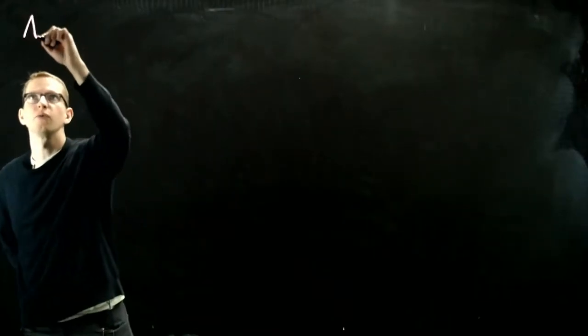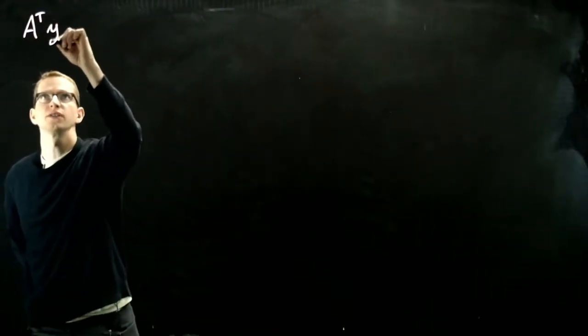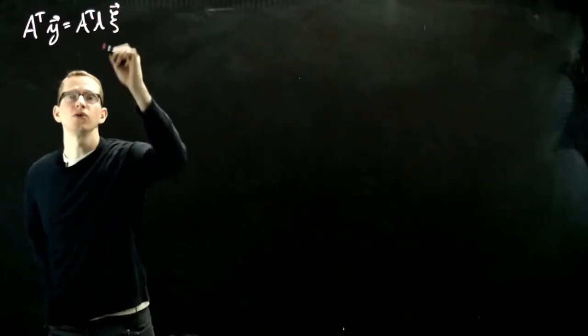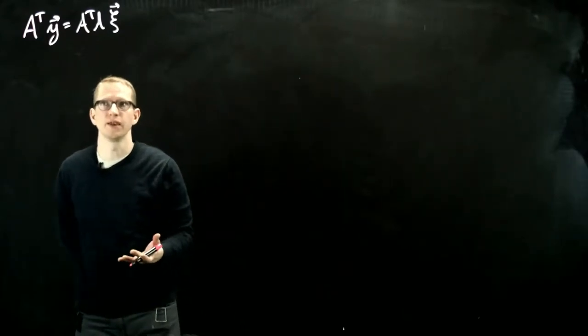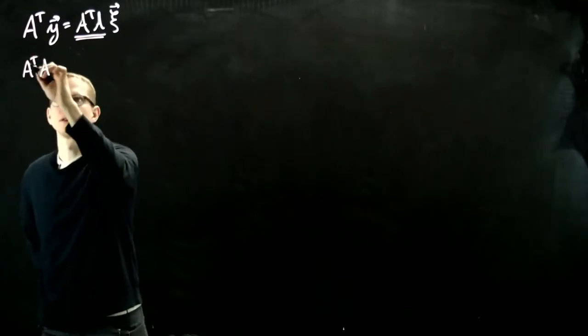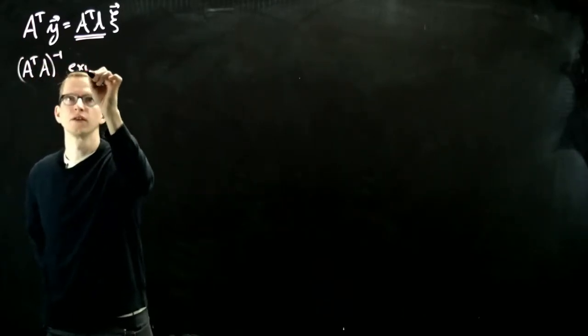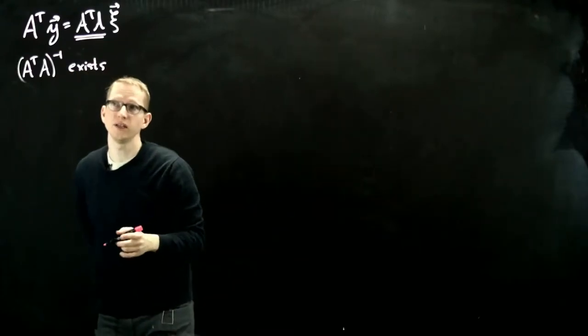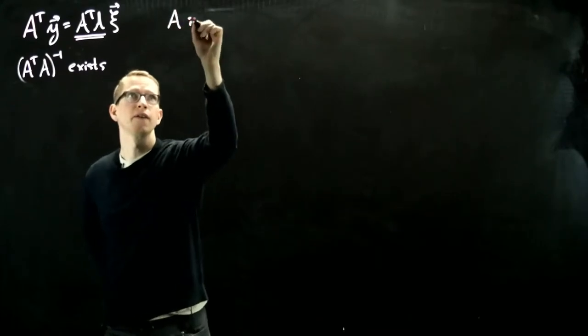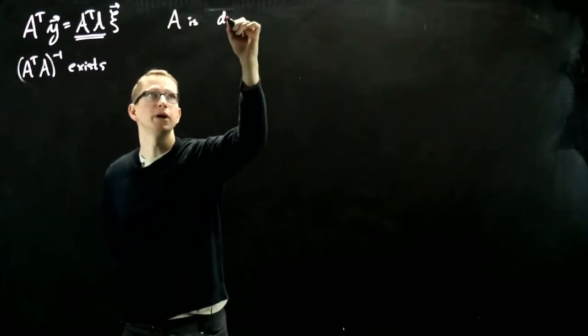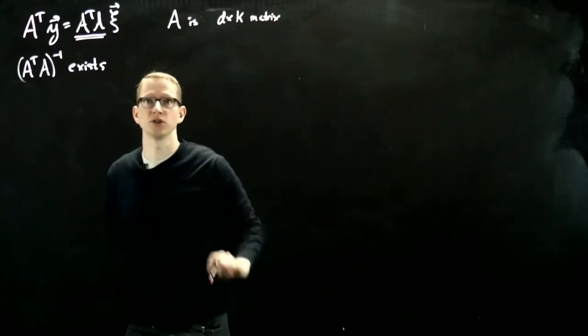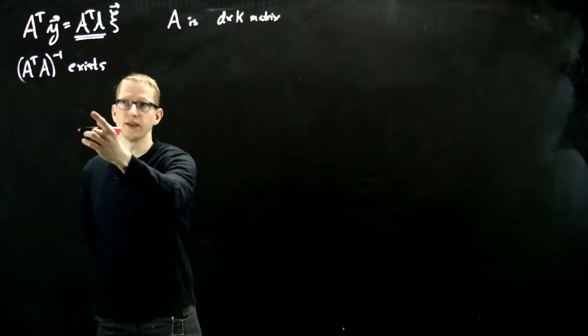Let's now understand when we can solve A transpose Y equals A transpose A xi using the method of taking the inverse of A transpose A. In order to take the inverse of this, if A is a D by K matrix, and again D is typically much much larger than K, then we want to know when this exists.